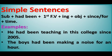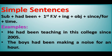First of all we will make simple sentences of past perfect continuous tense. The structure is: subject + had been + first form of verb with -ing (progressive form) + object + since/for + time. Examples: 'He had been teaching in this college since 2005.' 'The boys had been making a noise for an hour.'